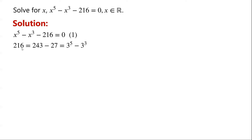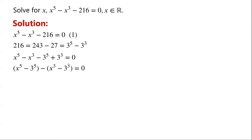200 and 16 can be written as 200 and 43 minus 27, which can be written as 3 to the power of 5 minus 3 cubed. So equation 1 can now be written as x to the power of 5 minus x cubed minus 3 to the power of 5 plus 3 cubed equals 0.